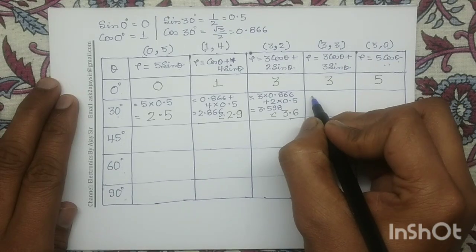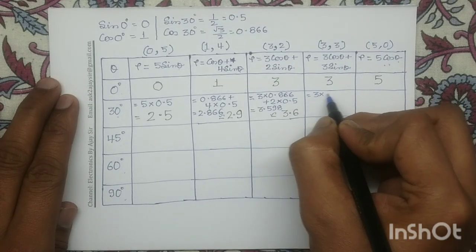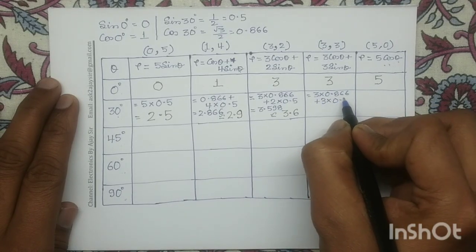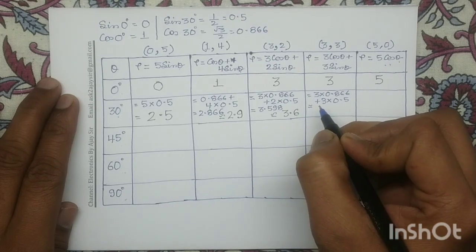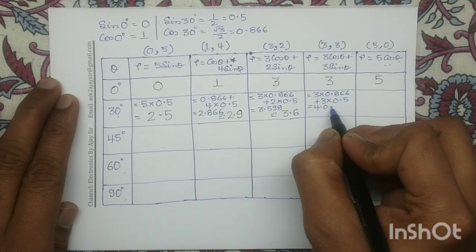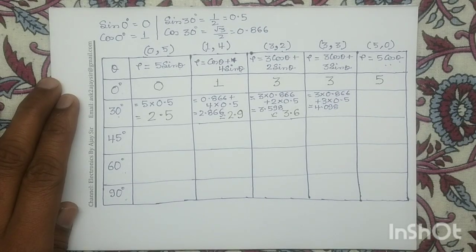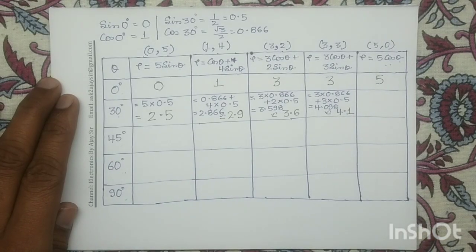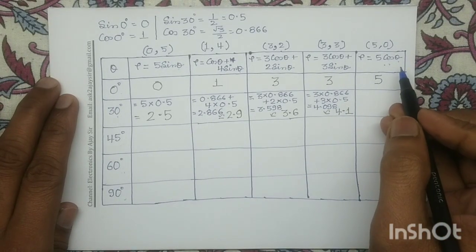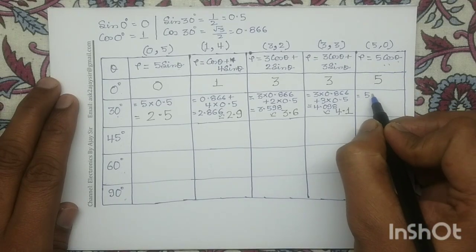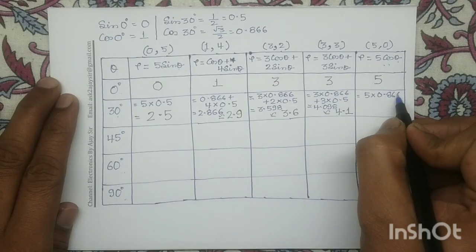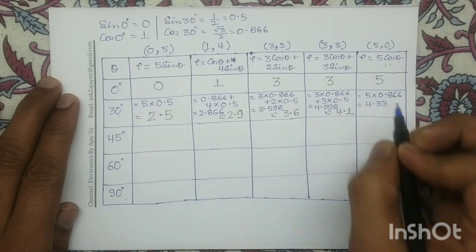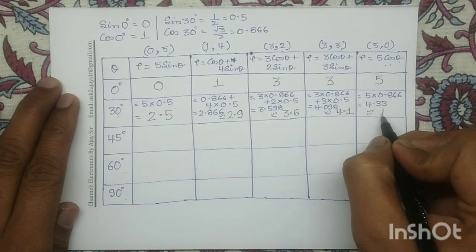Continuing for θ = 30°: for ρ = 3·cos(θ) + 3·sin(θ), we get 3 × 0.866 + 3 × 0.5 = 4.098, approximated to 4.1. For ρ = 5·cos(θ), we get 5 × 0.866 = 4.33, approximated to 4.3. So the ρ values for θ = 30° are: 2.5, 2.9, 3.6, 4.1, and 4.3.